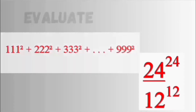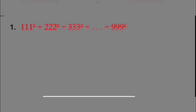Today we want to evaluate these expressions. To simplify this expression, we're going to start with one of the properties of exponents and powers. So this can be rewritten as 111 times 1 all squared. The second term can be rewritten as 111 times 2 all squared. The third one can be rewritten as 111 times 3 squared. And we go on like that: 111 times 4 all squared, 111 times 5 all squared, and so on until we get to the last term, 999 squared, which becomes 111 times 9 all squared.